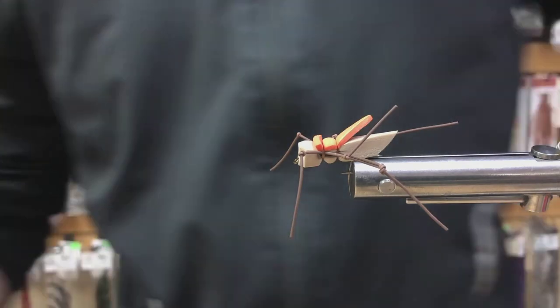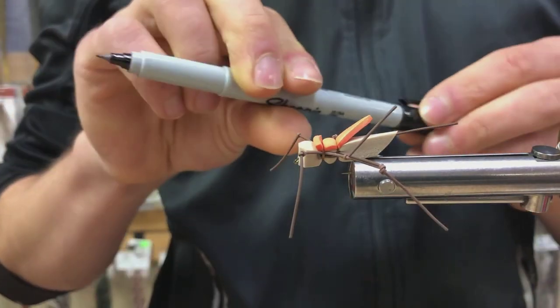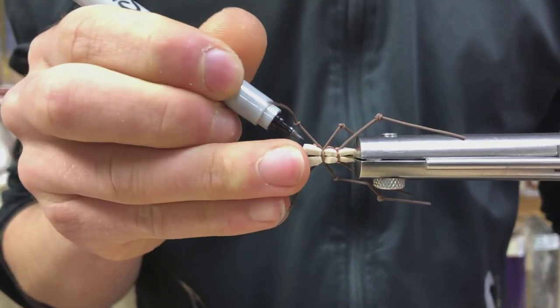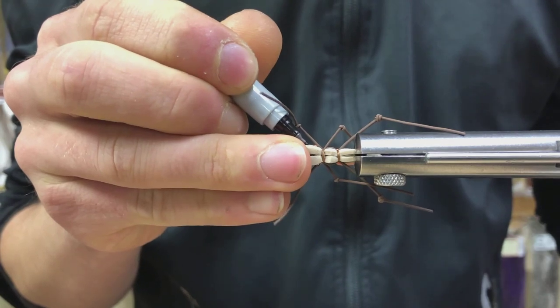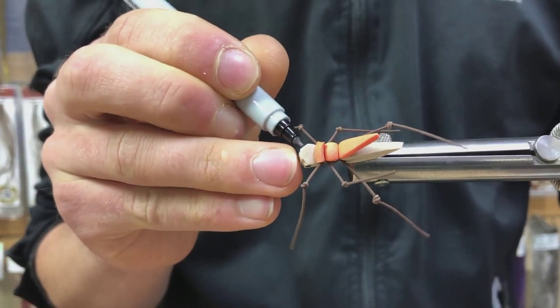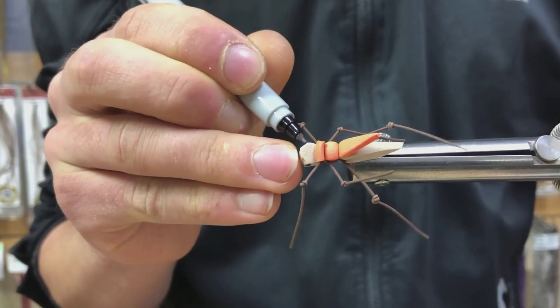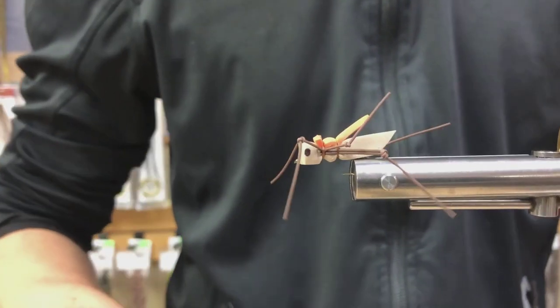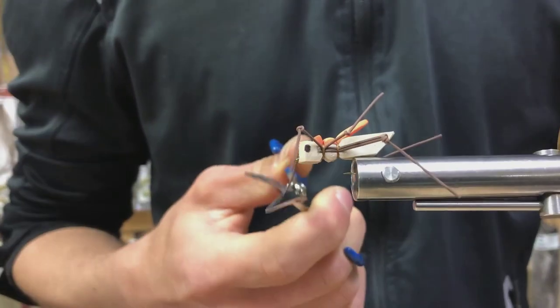Now, if you like, you can take a Sharpie like this. And I like to color in a little eye. Not that it makes a difference to the fish. Just makes them look cool. Like that. And just trim up the legs to your liking.